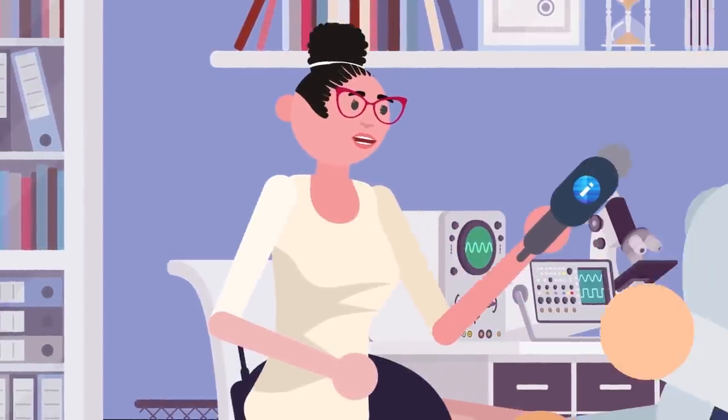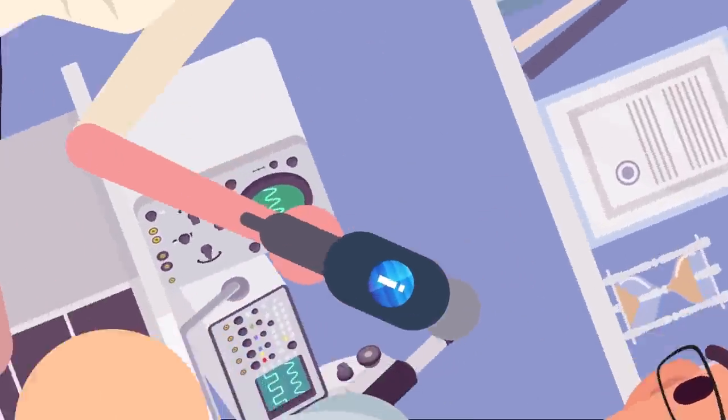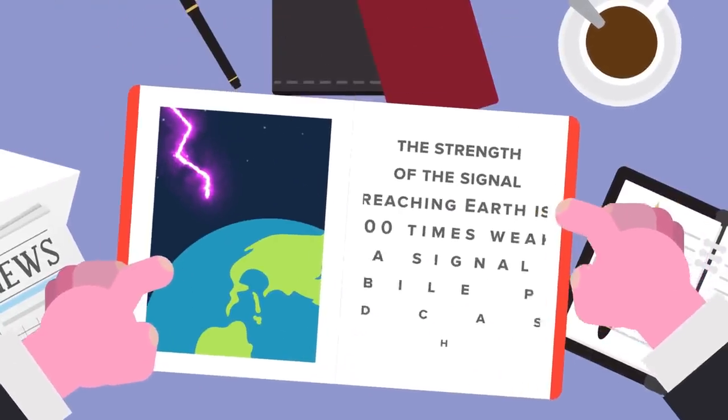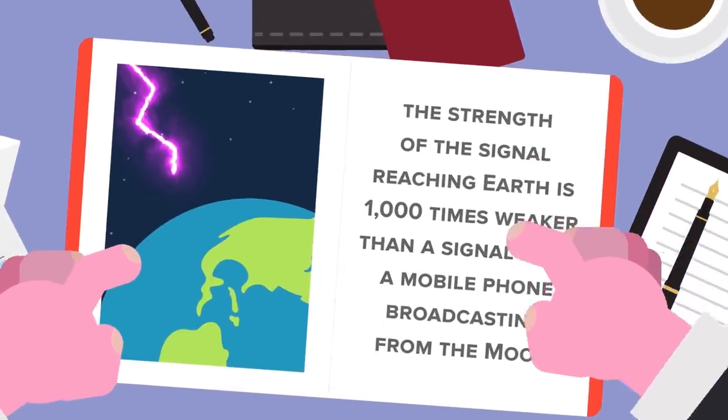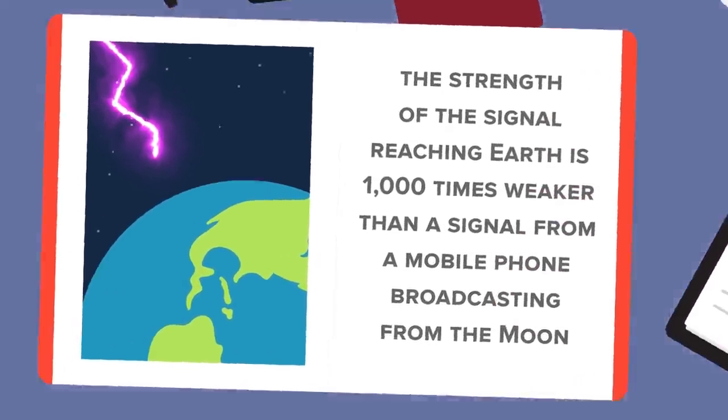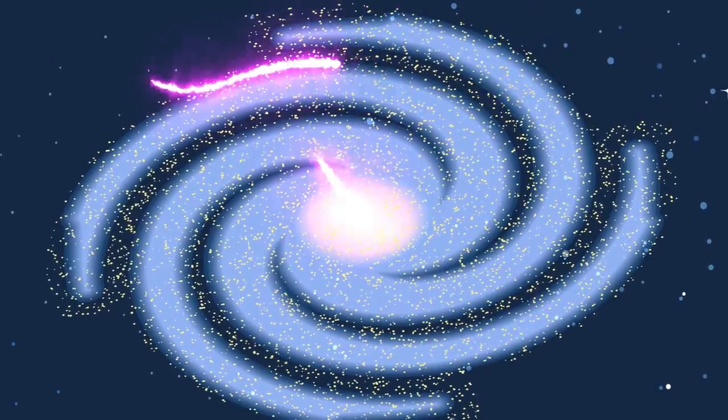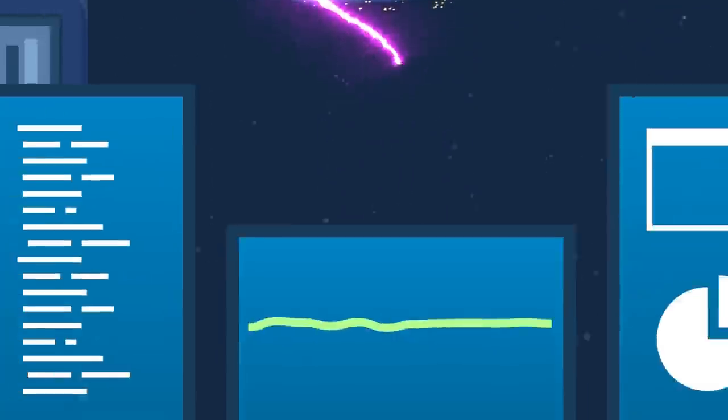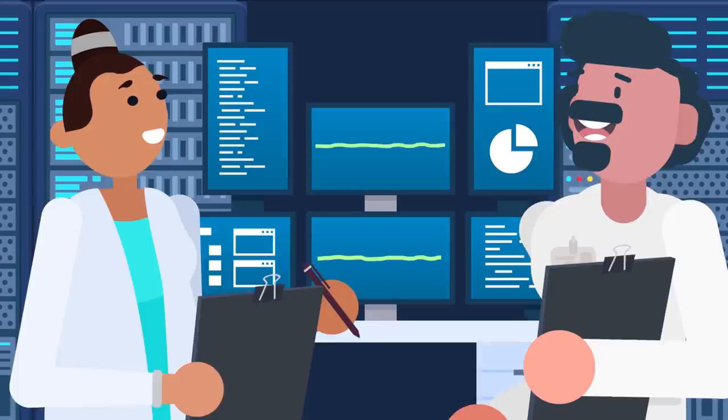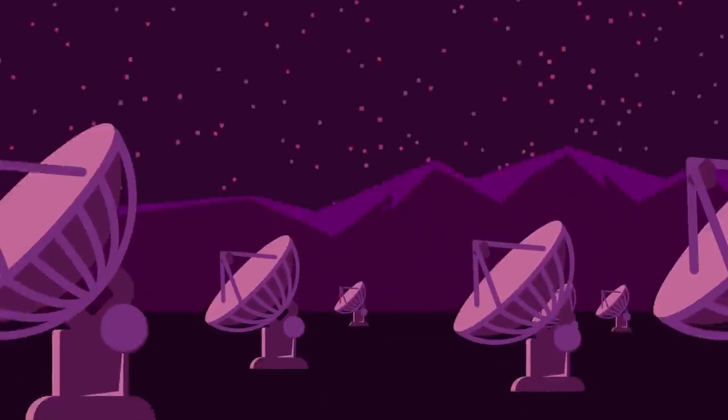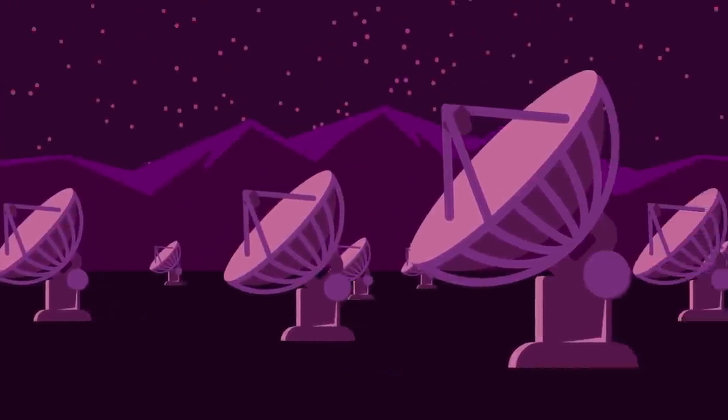One researcher has described FRBs as massive at their source, but the strength of the signal reaching the Earth is 1,000 times weaker than a signal from a mobile phone broadcasting from the moon. In fact, some research suggests that the Earth is receiving thousands of FRBs a day and we simply don't notice because we're only looking at small regions of the sky for short periods of time and our telescopes aren't yet sensitive enough to detect everything.